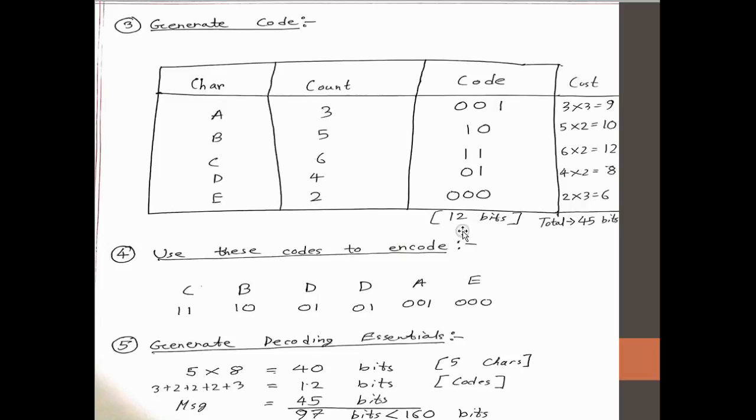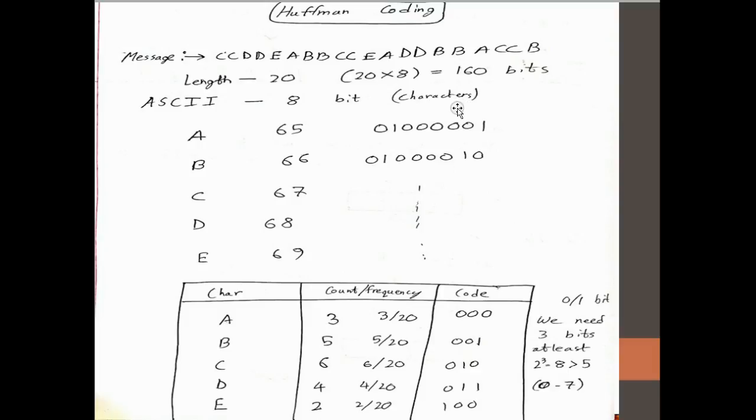So what's the benefit of doing this? When you had the normal encoding, you had 160 bits. Now let's see if we can decrease it.